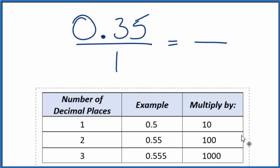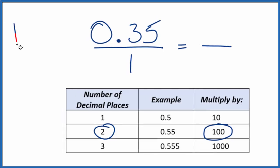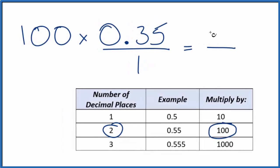With 0.35, we go out to two decimal places here, 1, 2. Because of that, we're gonna multiply by 100. 0.35 multiplied by 100 gives us 35.